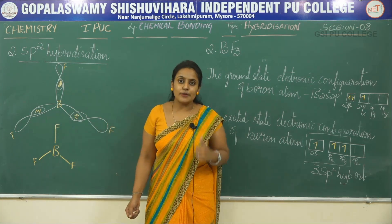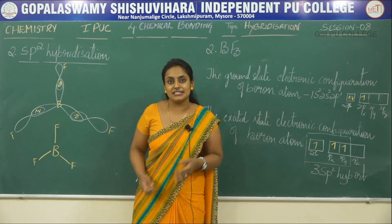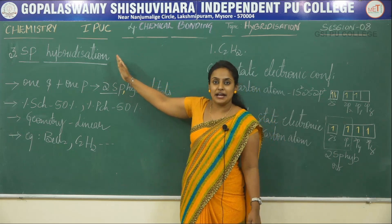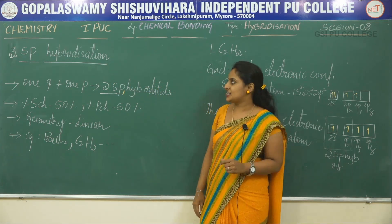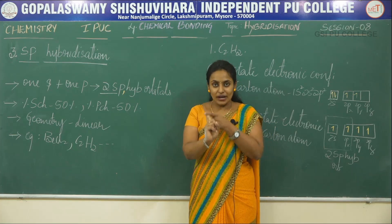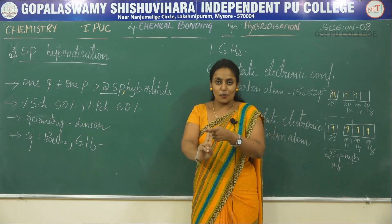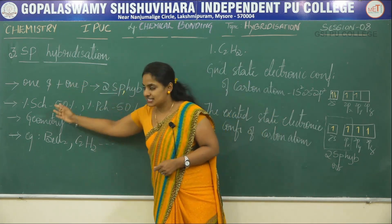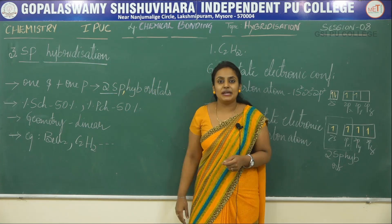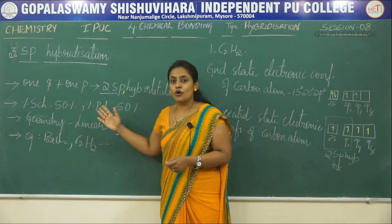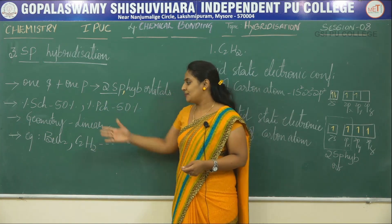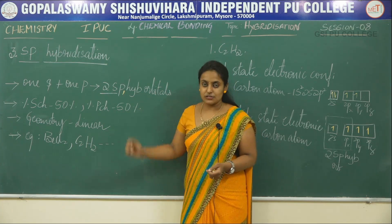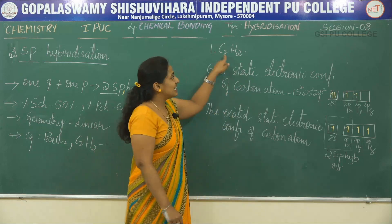Now let us move on to the third type of hybridization, that is sp hybridization. Intermixing of one s atomic orbital with one p atomic orbital gives rise to two sp hybrid orbitals. The percentage of s character is 50% and the percentage of p character is 50%. The geometry of such molecules is linear, and examples are BeCl2 and C2H2, the ethyne molecule.